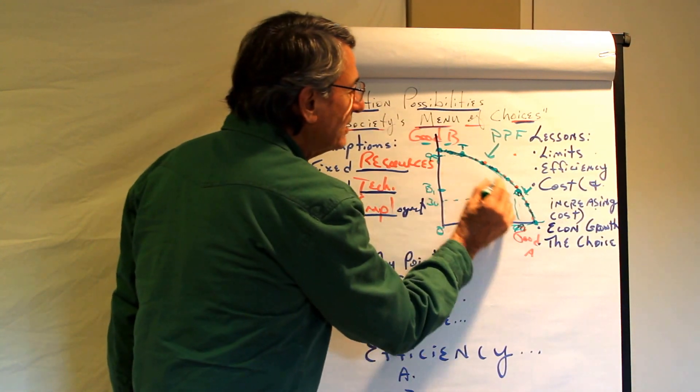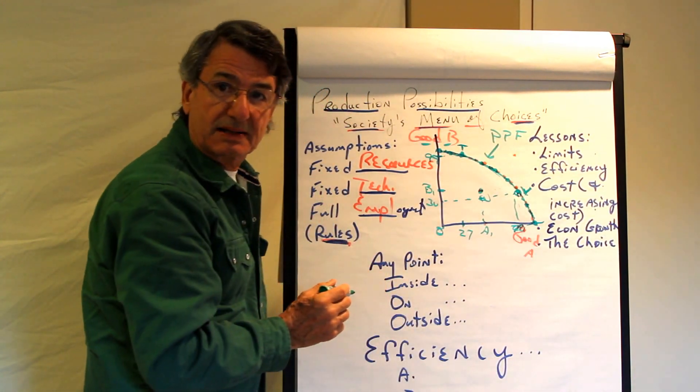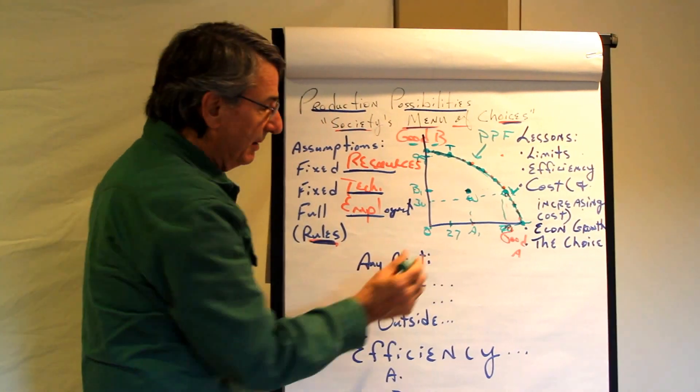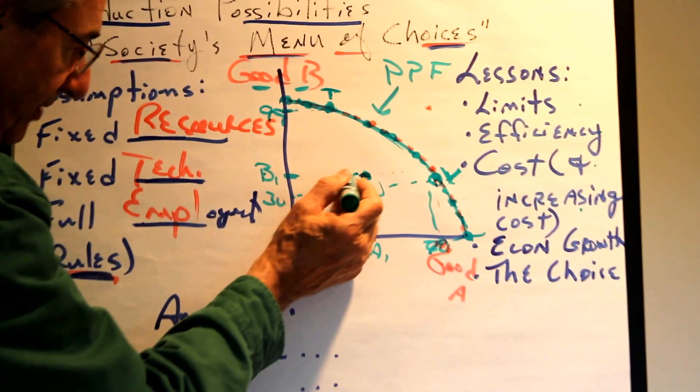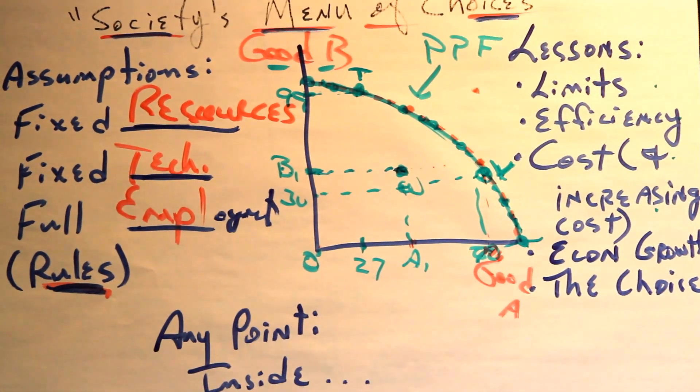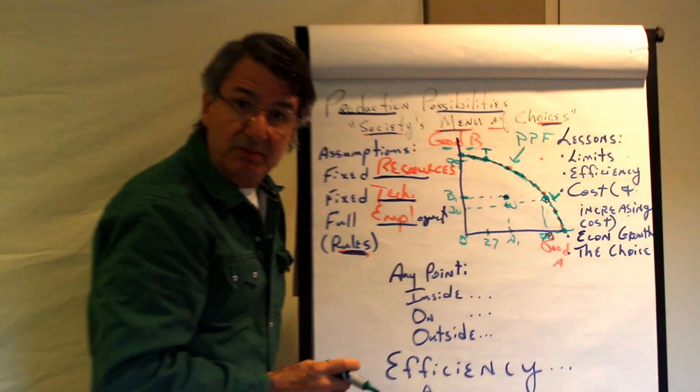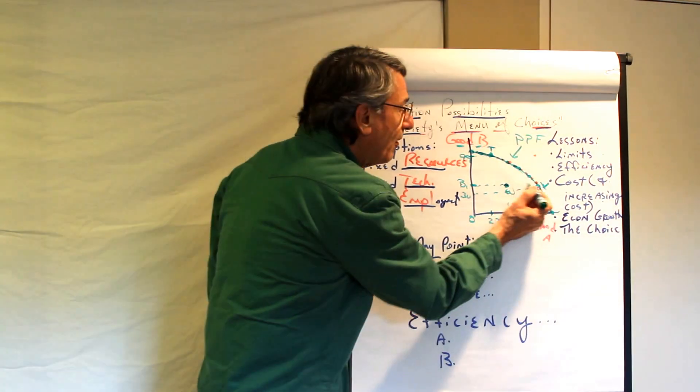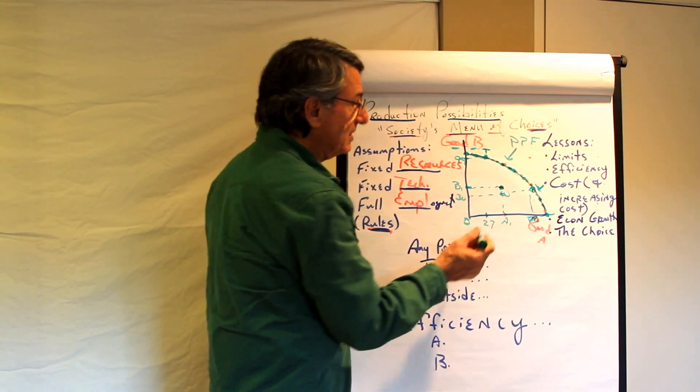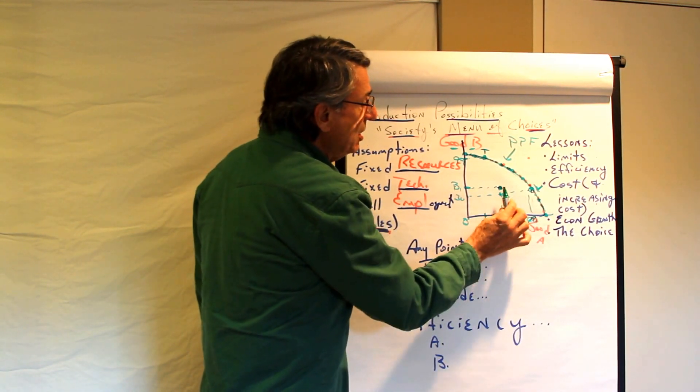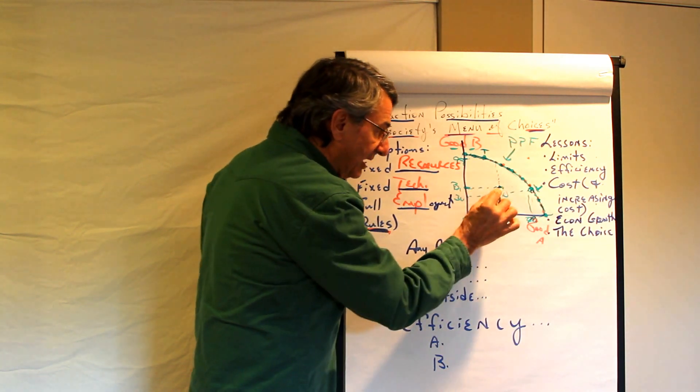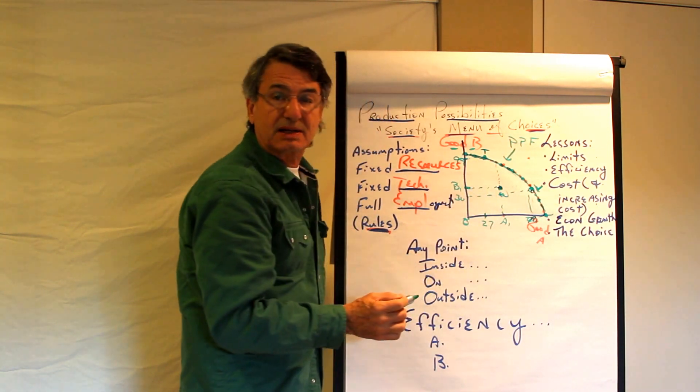All points along here are both maximum and possible. What about a point inside the production possibilities frontier like point W? Is it possible to produce at point W? The answer is yeah, we could produce B1 units of B and A1 units of A. It's possible. But is it maximum? No. Can we produce more of one without decreasing any of the other? And the answer is yeah, we could. So if it's possible to increase the production of one without decreasing the other, it demonstrates that that point is inefficient.